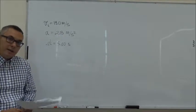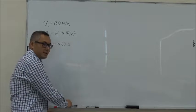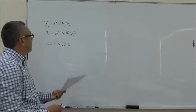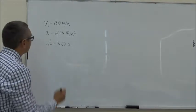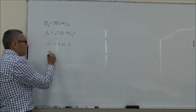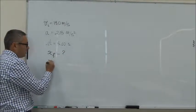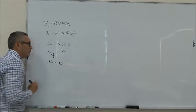In part A of the question we need to find how far does the car travel in this time interval. So in other words, the question is what is our x final, the final position of the car, if we take the initial position to be 0.